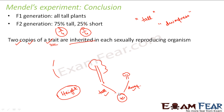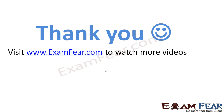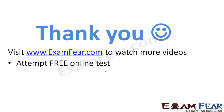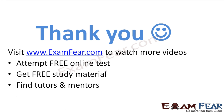The question is: which traits get expressed and which do not, and why is there a difference? Why does one trait get expressed whereas the other doesn't? We will talk about those two kinds of traits next. Please visit examfear.com to watch more videos, attempt free online tests, get free study material, and find tutors and mentors. Thank you.